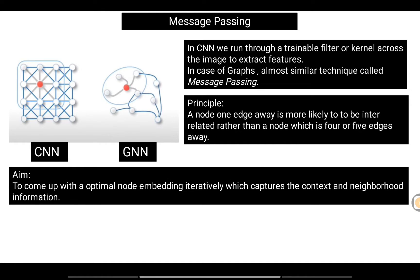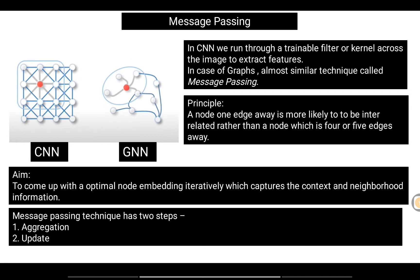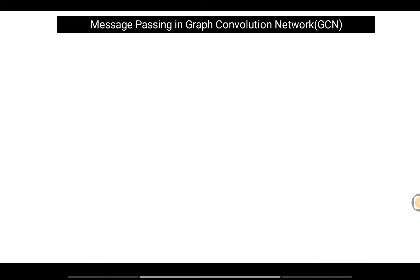The aim is to come up with an optimal node embedding iteratively, capturing context and neighborhood information. The key goal is to iteratively produce optimal node embeddings. Message passing involves two operations: aggregation and update. Every message passing technique comprises these two passes.